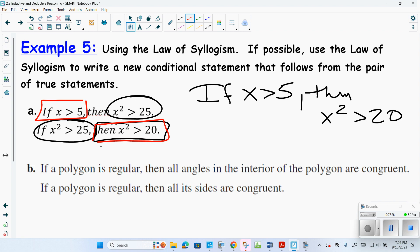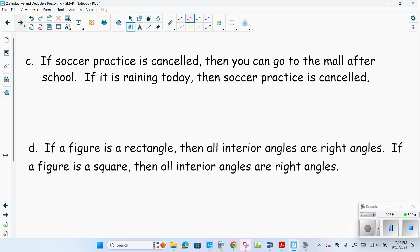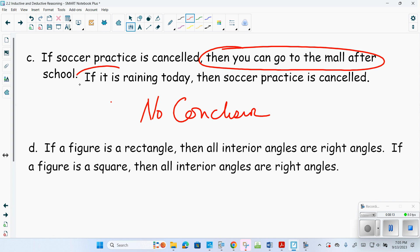If a polygon is regular, then all the interior angles of the polygon are congruent. If the polygon is regular, then all sides are congruent. This is not possible. Notice, the conclusion up here did not match the hypothesis. And therefore, it is not possible to use the law of syllogism. If soccer practice is canceled, then you can go to the mall after school. If it's raining today, then the soccer practice is canceled. Again, no conclusion. The conclusion does not match the hypothesis. The last one: if a figure is a rectangle, then all the interior angles are right angles. If a figure is a square, then all the interior angles are right angles. Again, no conclusion. I thought we had a conclusion on the last one.